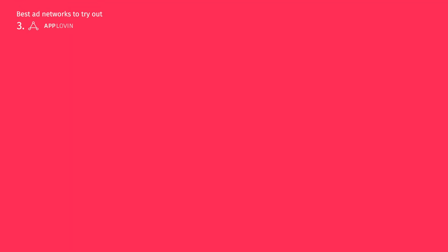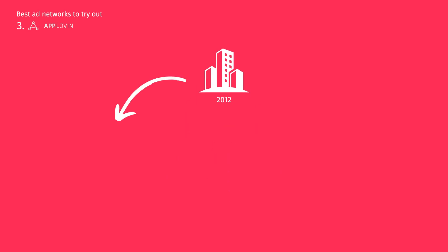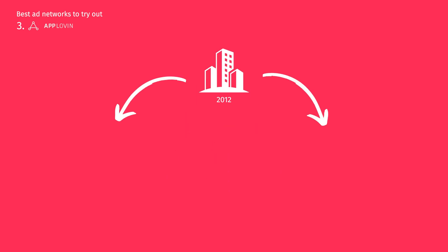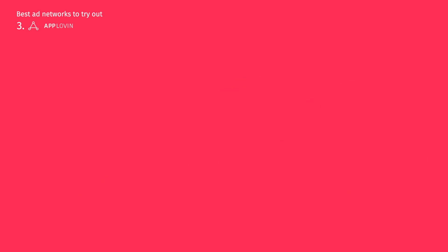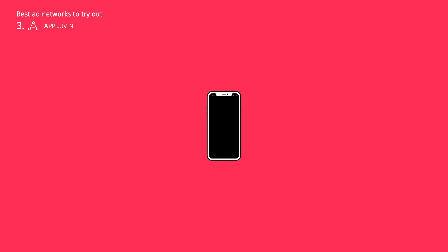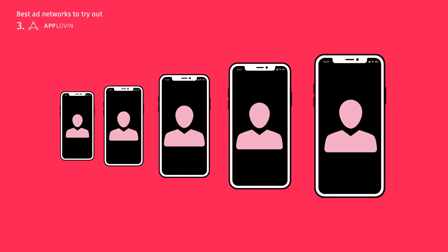AppLovin, founded in 2012, is one of the best ad networks for both mobile advertisers and publishers. It's designed for media apps of all sizes, from indie publishers to established developers, aiming to help connect with their ideal customers. For a more detailed list, you can check out the blog post linked in the description box below.